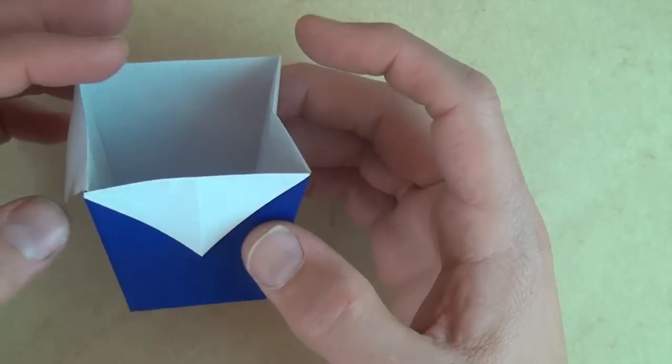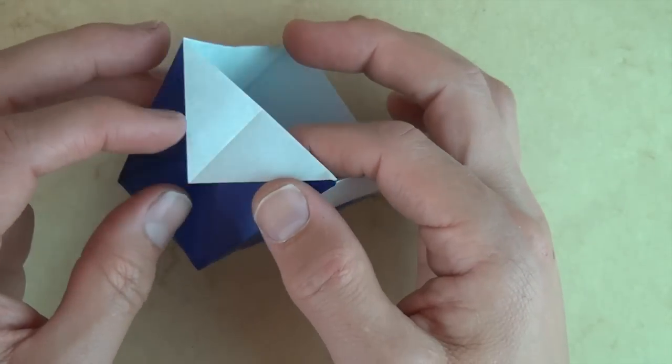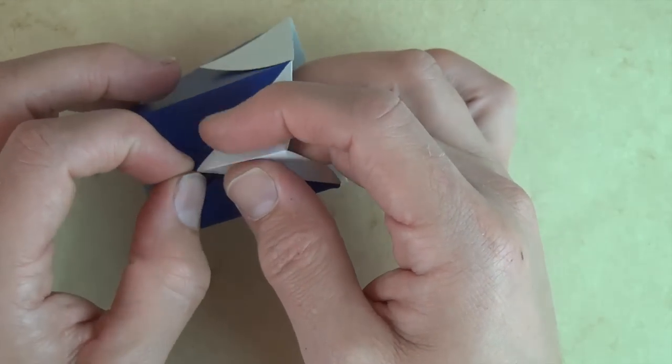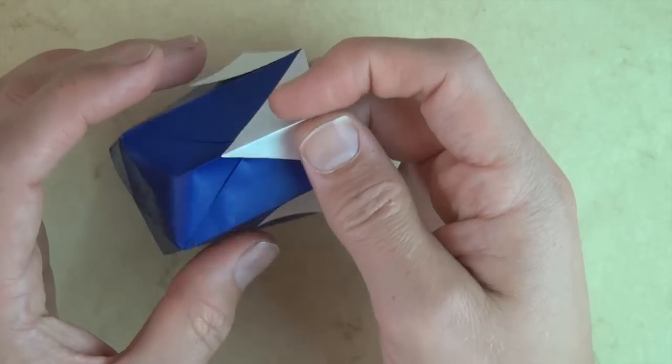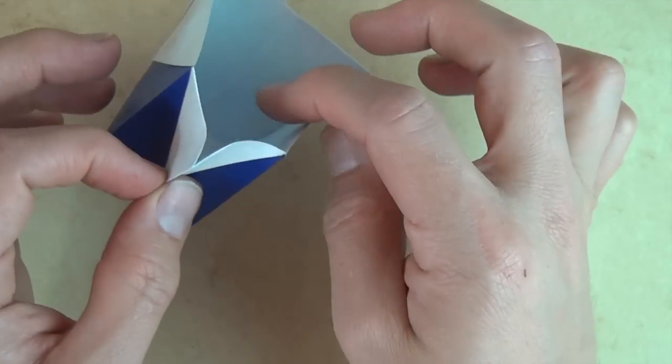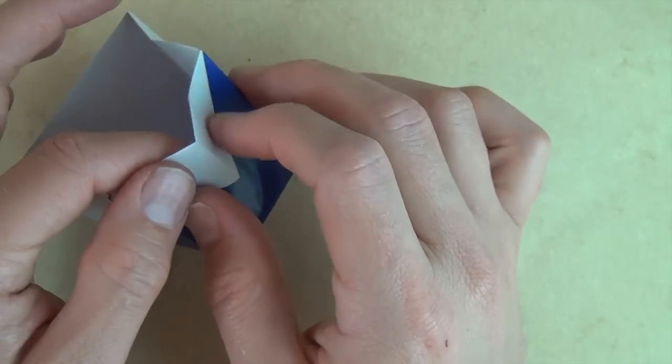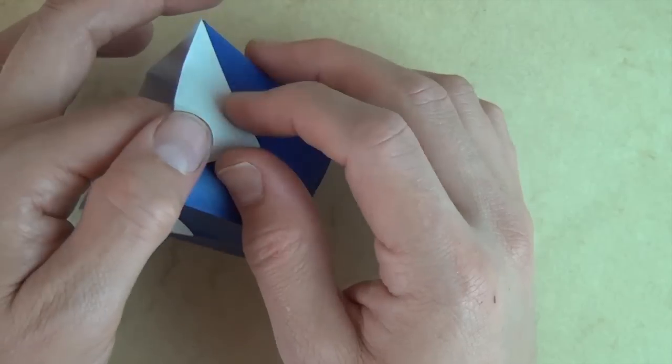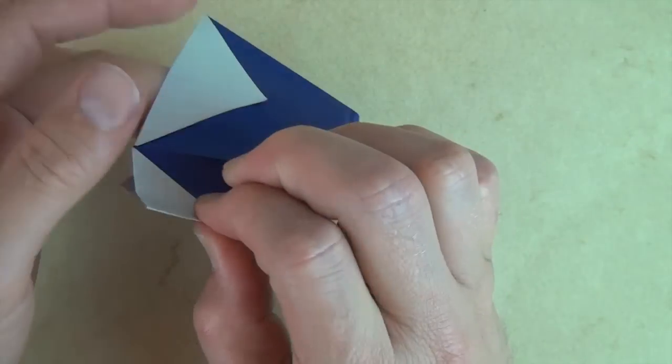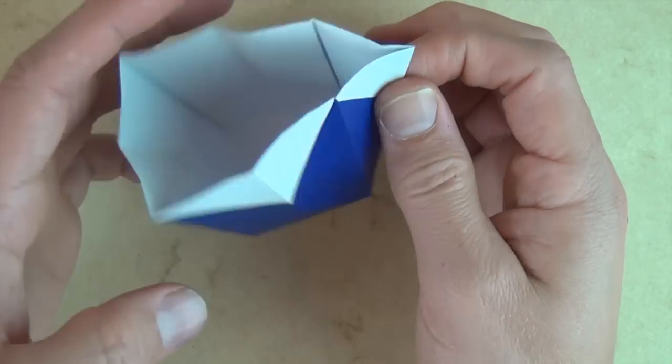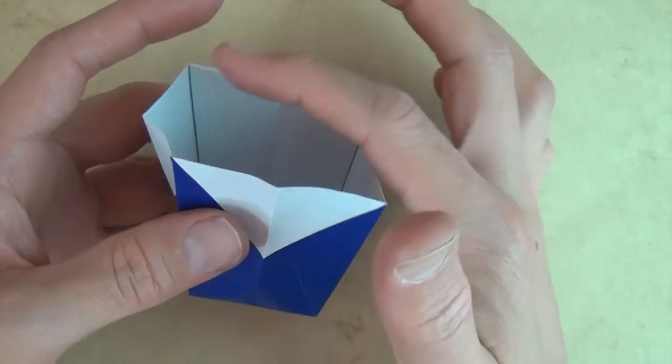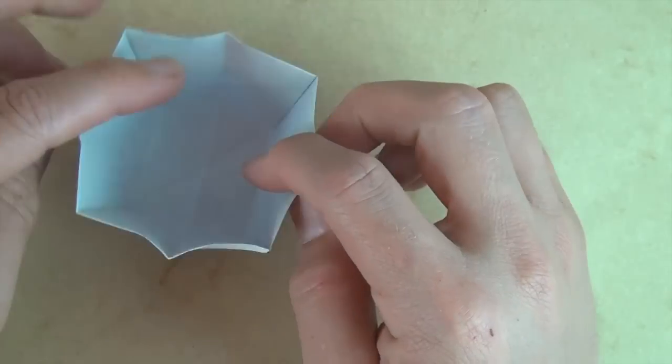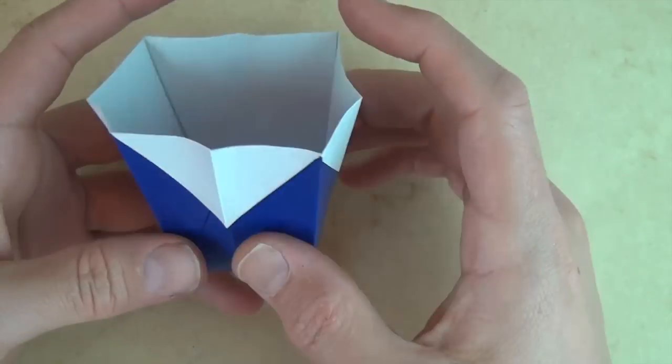And to make it a little bit more secure you can pinch on this crease like that and you can also do that on the other three such creases and that will just keep these flaps from coming up and it will also make the top of the box a little bit more round so it will actually hold more stuff.